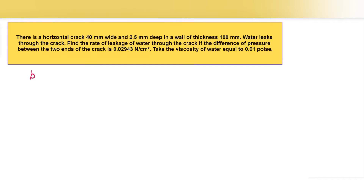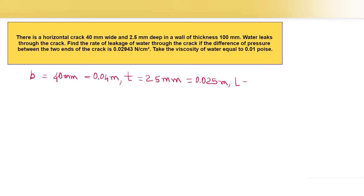The fourth question: there is a horizontal crack 40 mm wide and 2.5 mm deep in a wall of thickness 100 mm, so width b = 40 mm, depth (thickness) t = 2.5 mm, and length L = 100 mm. This is a case of flow between two parallel plates.